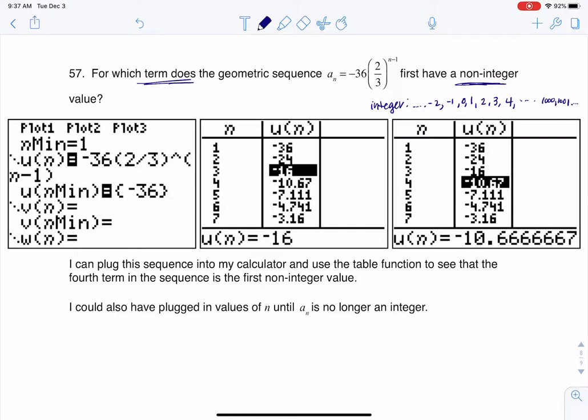So you see me working it out here on my calculator, but let me just do it by hand. So if I know that a_n is equal to negative 36 times (2/3) to the n minus 1, let's check n equaling 1. So if I check for n equaling 1, if we look at this,